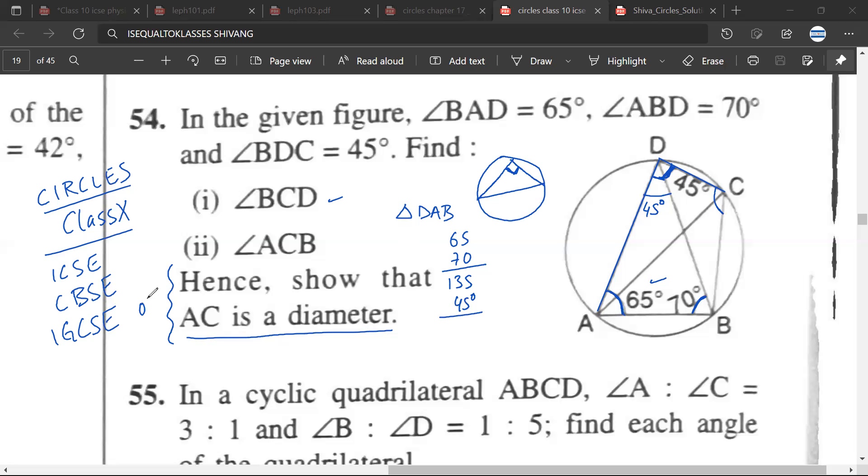And angle BCD, how do we find BCD? So angle DAB is 65 degrees and because the whole quadrilateral is a cyclic quadrilateral, therefore 180 minus 65, you have 115 degrees. Great.